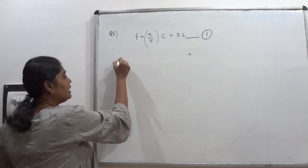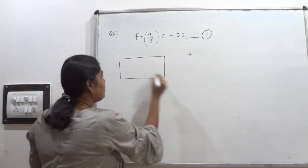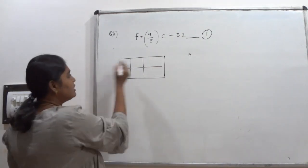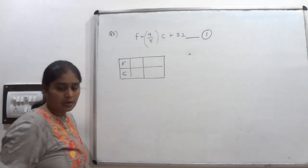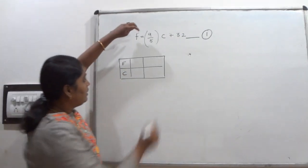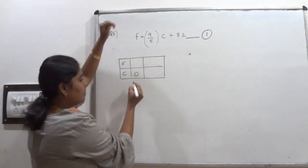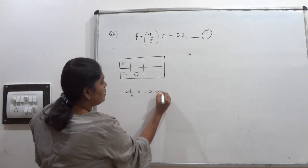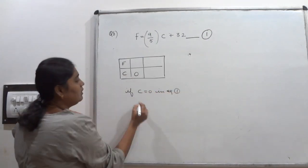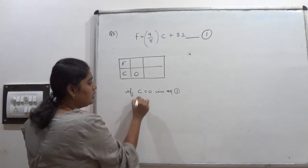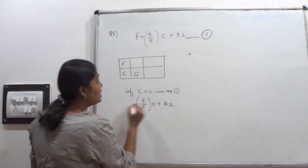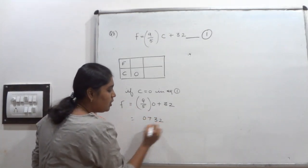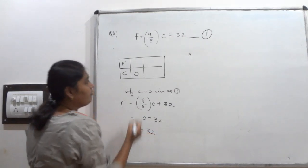To draw the graph, I need 2 coordinate points. I am keeping C equal to 0. If C equals 0 in equation number 1, then F equals 9 by 5 into 0 plus 32. 9 by 5 into 0 will be 0, and 0 plus 32 is 32. So F value is 32.